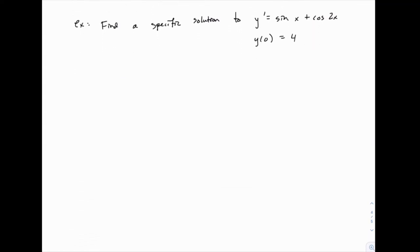So again, notice that there's no y's on the right side. It's simply x's on the right side, and then we have y prime on the left side. So we can integrate both sides. Y equals the integral of sine of x plus cosine of 2x dx.